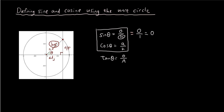That symbol actually means opposite, so we can say sin θ equals the opposite, just for the unit circle. Now looking at cos θ, which is adjacent over hypotenuse — since the hypotenuse is equal to 1, we can say cos θ equals the adjacent. So the new equation is cos θ equals adjacent.